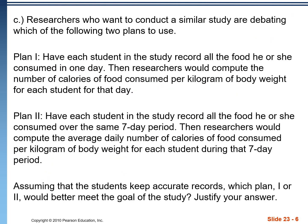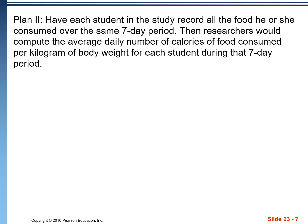Part C: we have researchers who want to conduct a similar study looking at two different plans. In plan one, each student in our sample records all the food that they eat in a single day — that's the total we would put into our stem plot. In plan two, we assign all our students the same seven-day period; they'll record all the food that they eat, and we'll find an average per day over those seven days. Assuming that the students keep accurate records, which plan — one or two — would better meet the goal of this study? We're going to want to select plan two, but we need to justify it. A bigger sample size is always better, and in plan two we're collecting data over seven days versus one day for plan one.